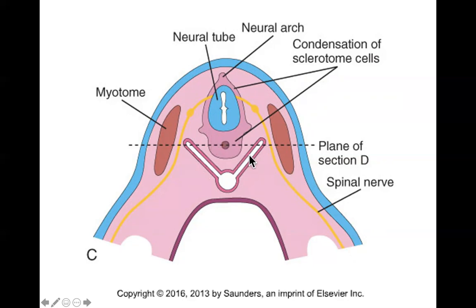As this vertebra grows around the neural tube, all that happens is it just adds cells like building blocks. It stacks a few more here and a few more here and a few more here until it finally meets in the middle. There's no migration of cells at all. It's just differential tissue growth.